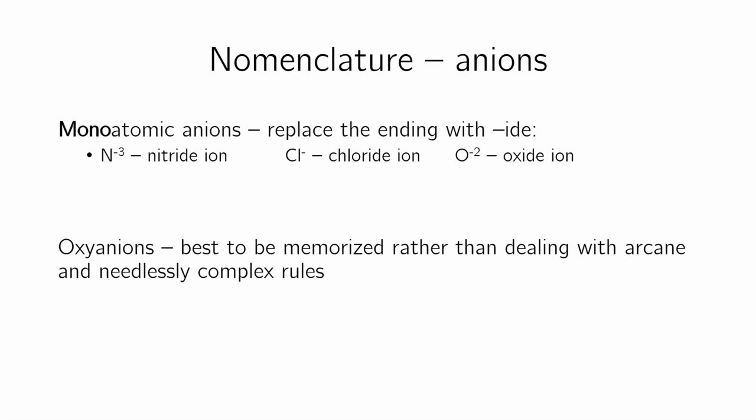Oxyanions. These are anions that are made up of several elements, not just one. And there is a systematic way of doing this, and if you look at your textbook, they explain how you name them and blah, blah, blah. But I think it's just, the method by which they name it is so ridiculously arcane. Don't worry about it. Just memorize it.